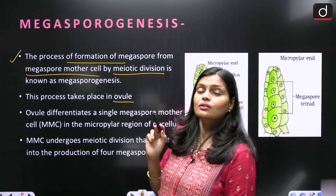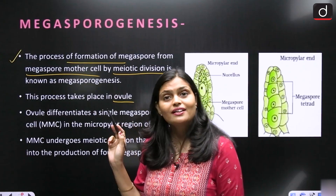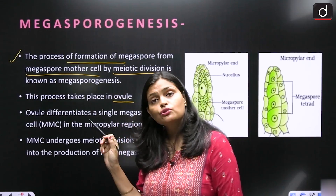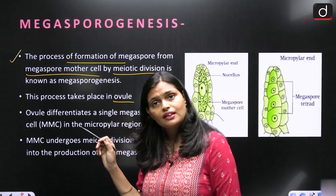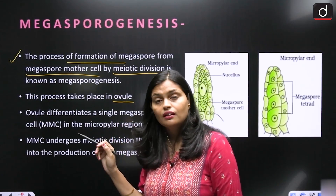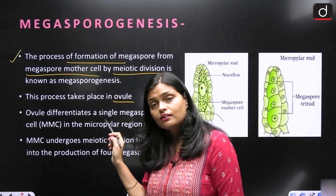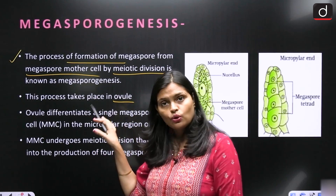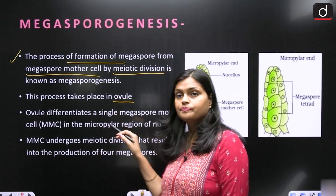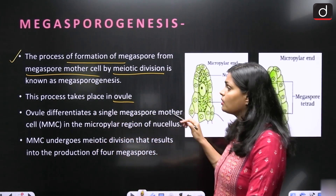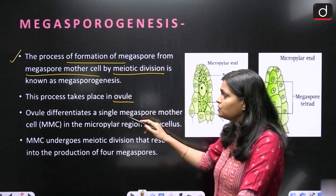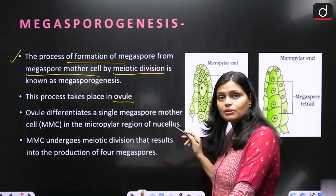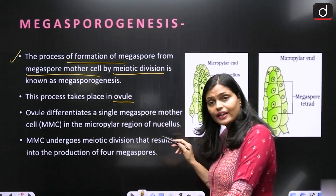Where does Microsporogenesis take place? Within the Anther. Megasporogenesis takes place within the Ovule. The Ovule differentiates into a single Megaspore mother cell.